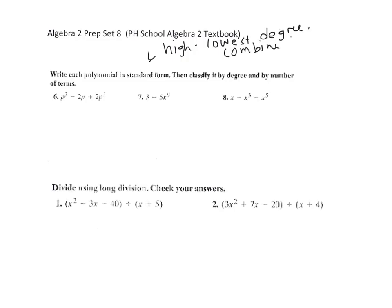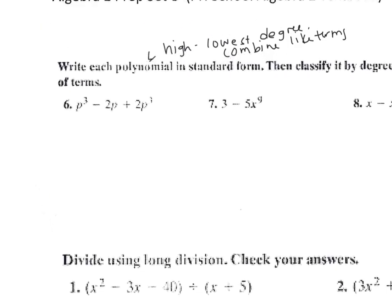Like terms have the same variables and the same exponents. So this first one, you have p cubes, that's the highest degree. So you have 1p cubed and 2p cubed, so it's 3p cubed and then minus 2p.